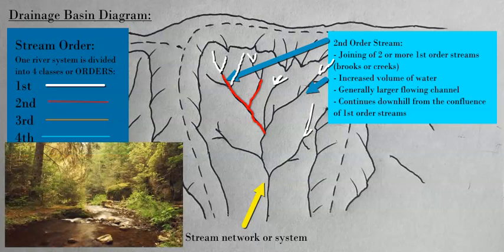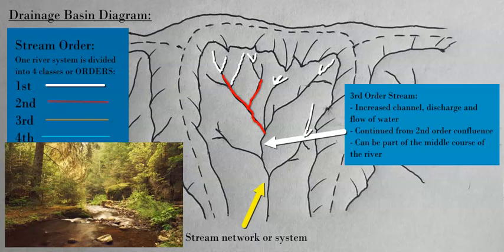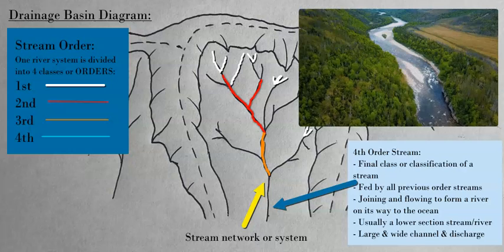The second order stream continues downhill to another confluence where it becomes the third order stream. The third order stream is a larger stream or river based on its position, how much water is in the system, and the catchment area. It will then join up with other second or third order streams and turn into a fourth order stream.